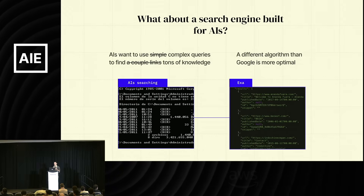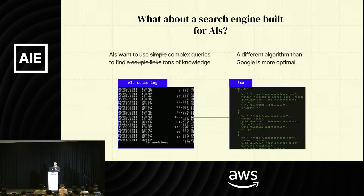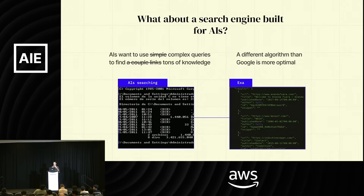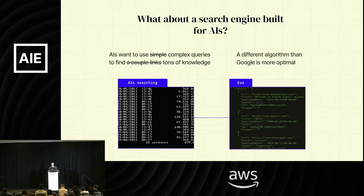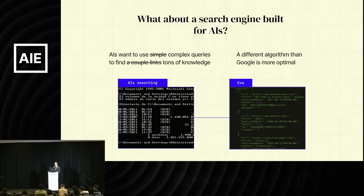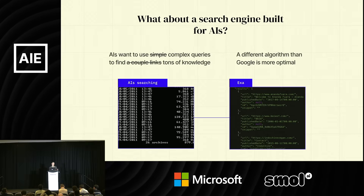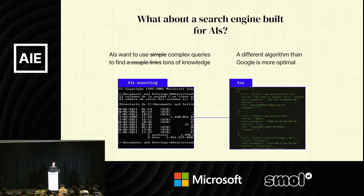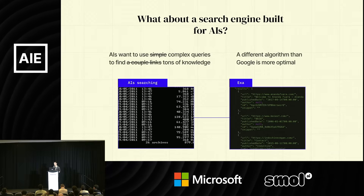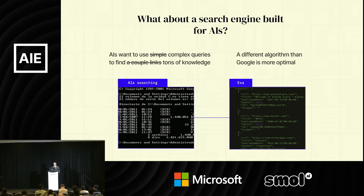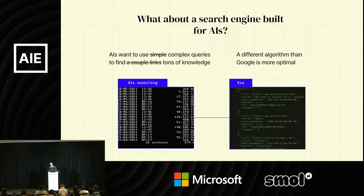It would be crazy if the same algorithm optimal for humans was also optimal for AIs. A lot of the search tools we're talking about these days on Twitter are still using the old traditional search combined with AIs — it's just not the right puzzle fit. So at Exa, we're really trying to think about what is the right search engine for this AI world.